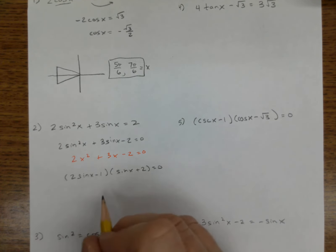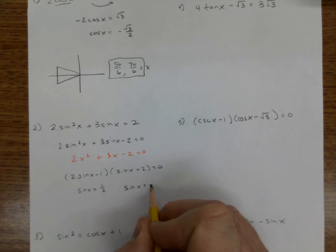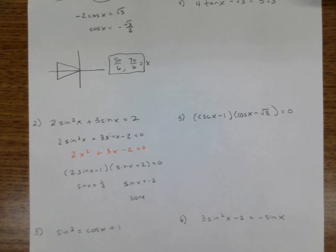Let's solve both of them. This would be sine of x is equal to 1/2 and sine of x is equal to negative 2. Well, sine can never be above negative one and positive one, so we're going to say there's no solutions there.